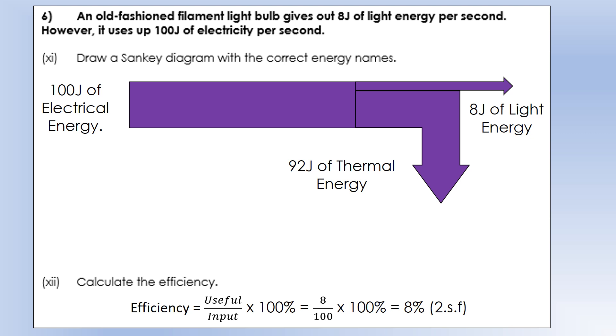We can also do these diagrams using power instead of energy. 8 joules of energy every second is a power of 8 watts. Because remember, 1 watt is 1 joule per second. So 8 joules per second is 8 watts of power. If we supply 100 joules every second, that's an electrical power of 100 watts. That means we're wasting 92 watts or 92 joules per second of thermal energy.